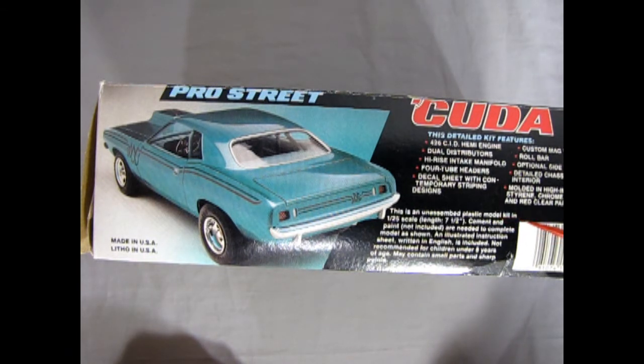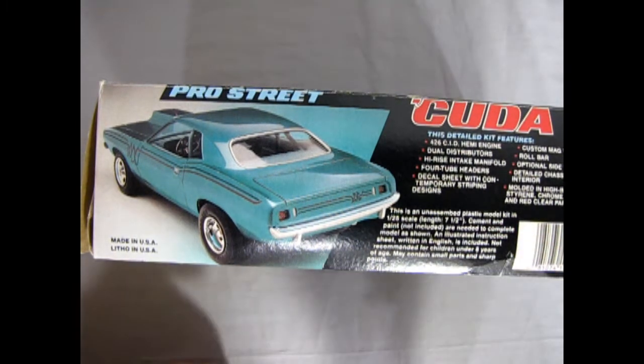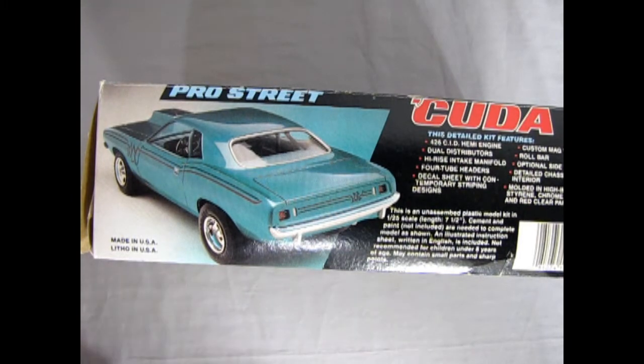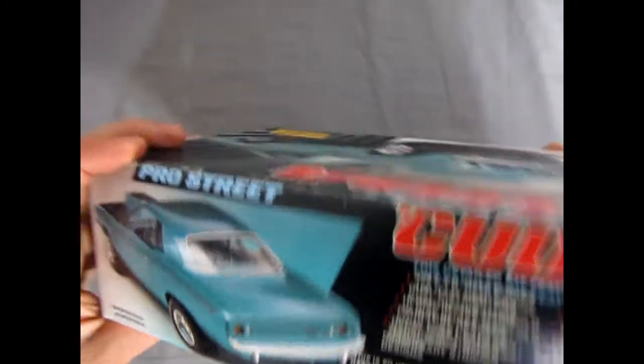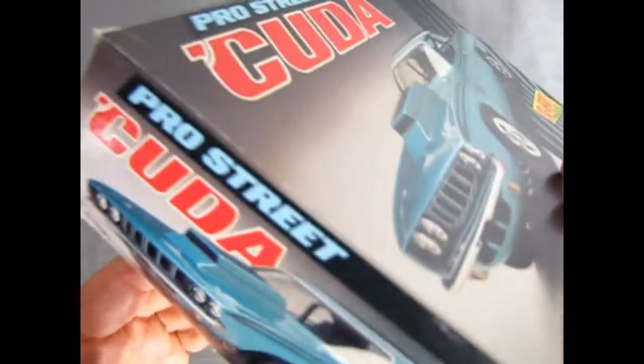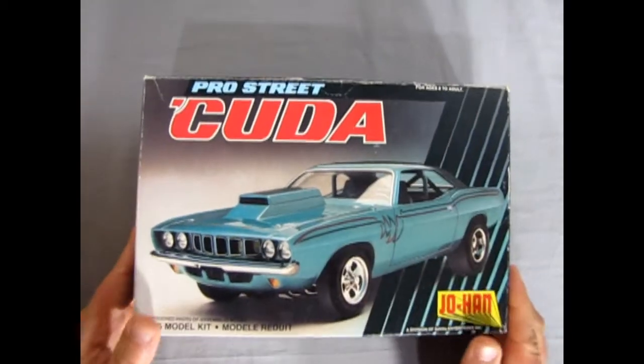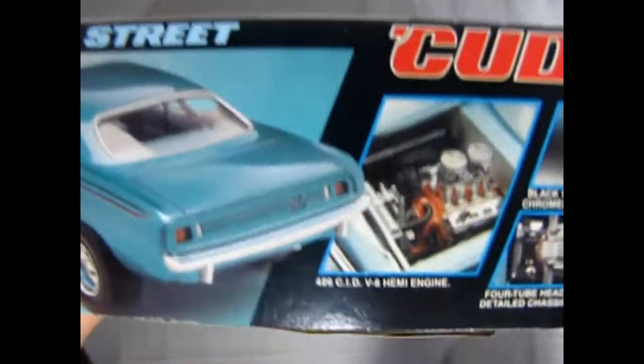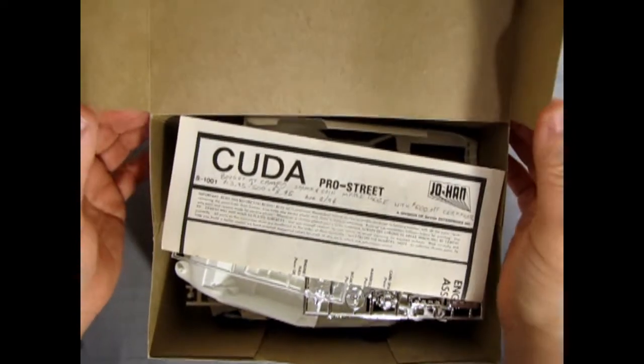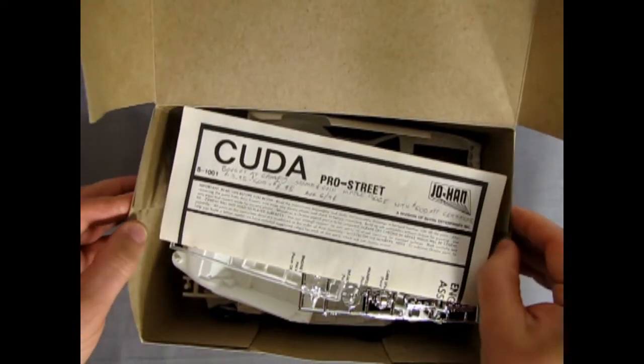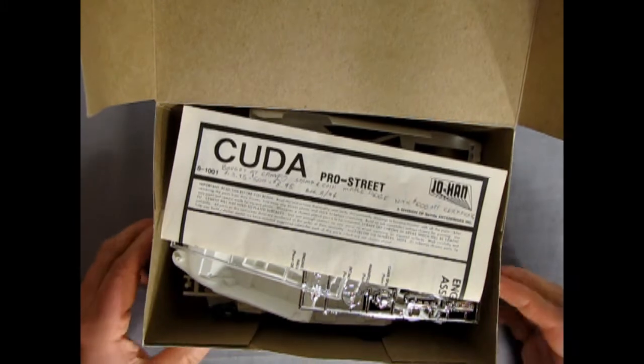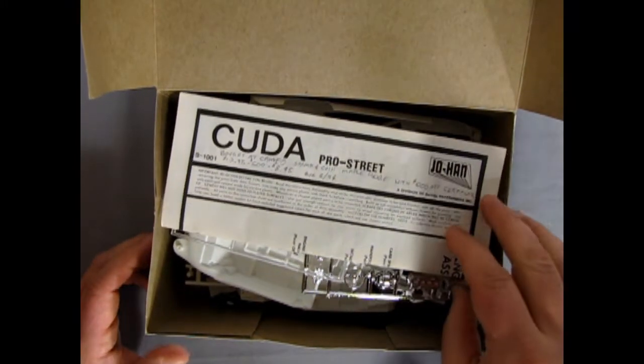This is an unassembled plastic model kit in 125th scale. Now this is a flip box style, much like Revel had. Only this is better because they glued the sides in. Whereas Revel just had those little tab things.